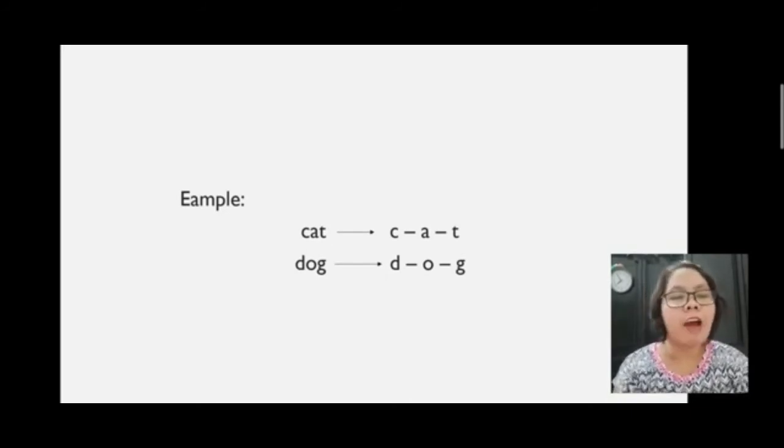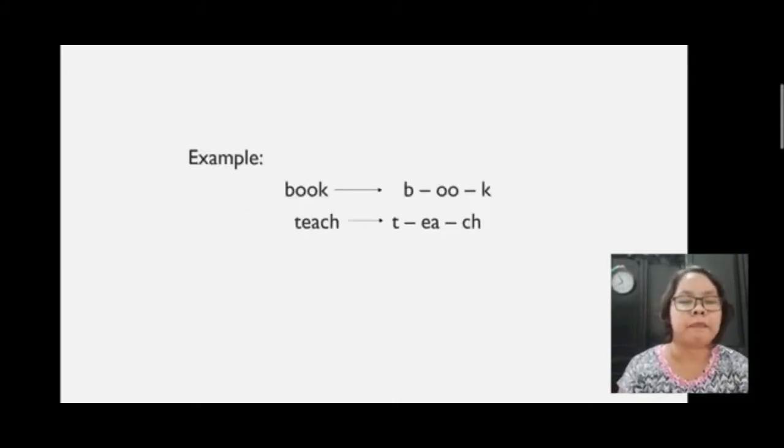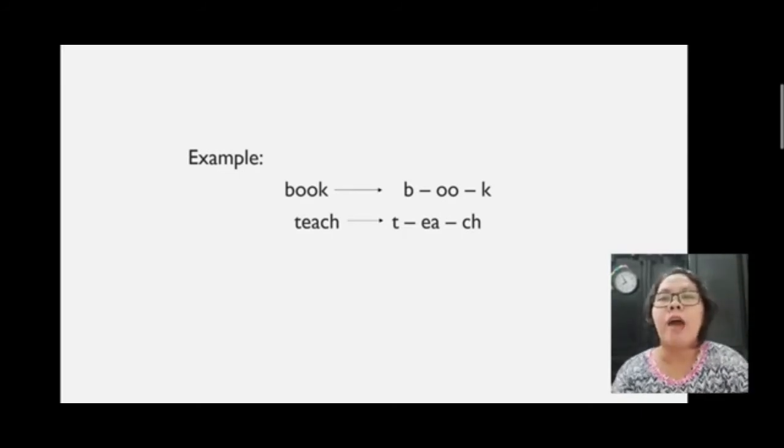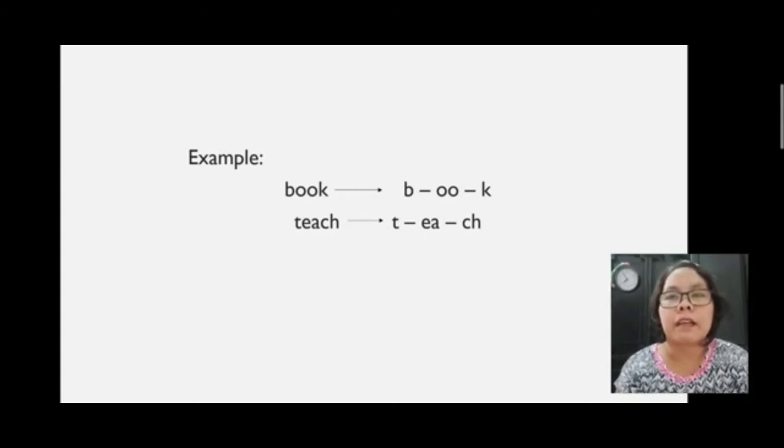However, it's not always counted by the number of letters in a word because we are referring to sounds. Here is another example. How many phonemes are there in the word book? Okay, instead of having four that may represent the letters, it's just three. These phonemes are b, oo, k. And the word teach, which has how many letters? Five. But the phonemes are just three. And these are t, ea, ch.